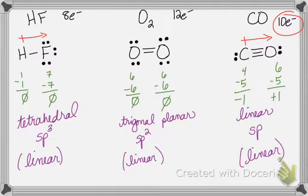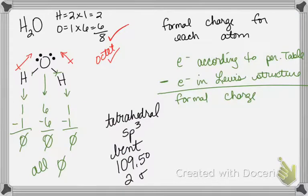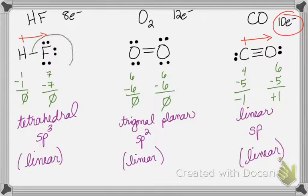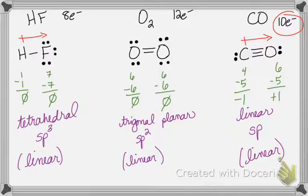We can still do sigma and pi for those molecules. HF has one sigma bond. Oxygen has one sigma and one pi — it's a double bond. Carbon monoxide has one sigma and two pi — it's a triple bond.